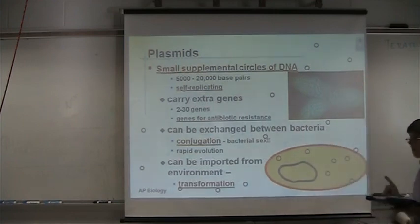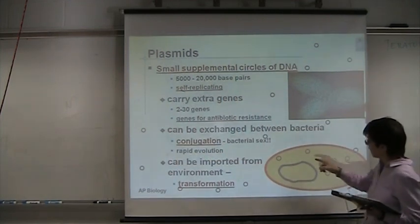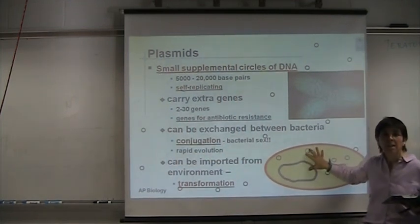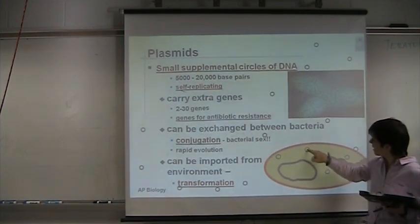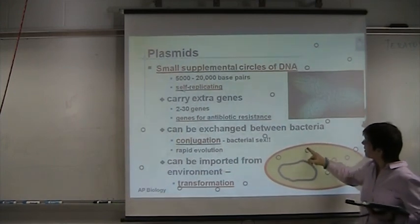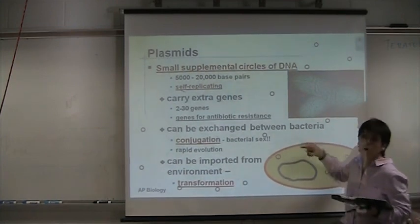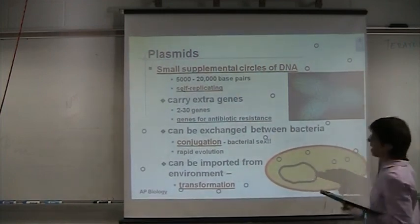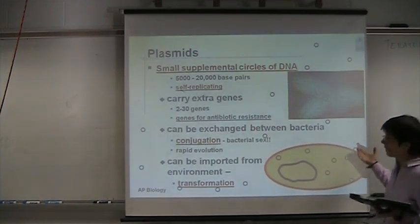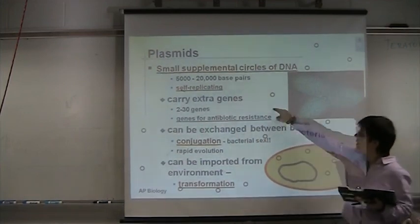How can bacteria share plasmids with each other? There are two different ways. One is conjugation — a bacteria that has an F-plus gene will copy its plasmid, and then through a pilus, the copied plasmid will be transferred to the recipient bacteria. That is conjugation: from one bacteria to another, you copy and transfer.